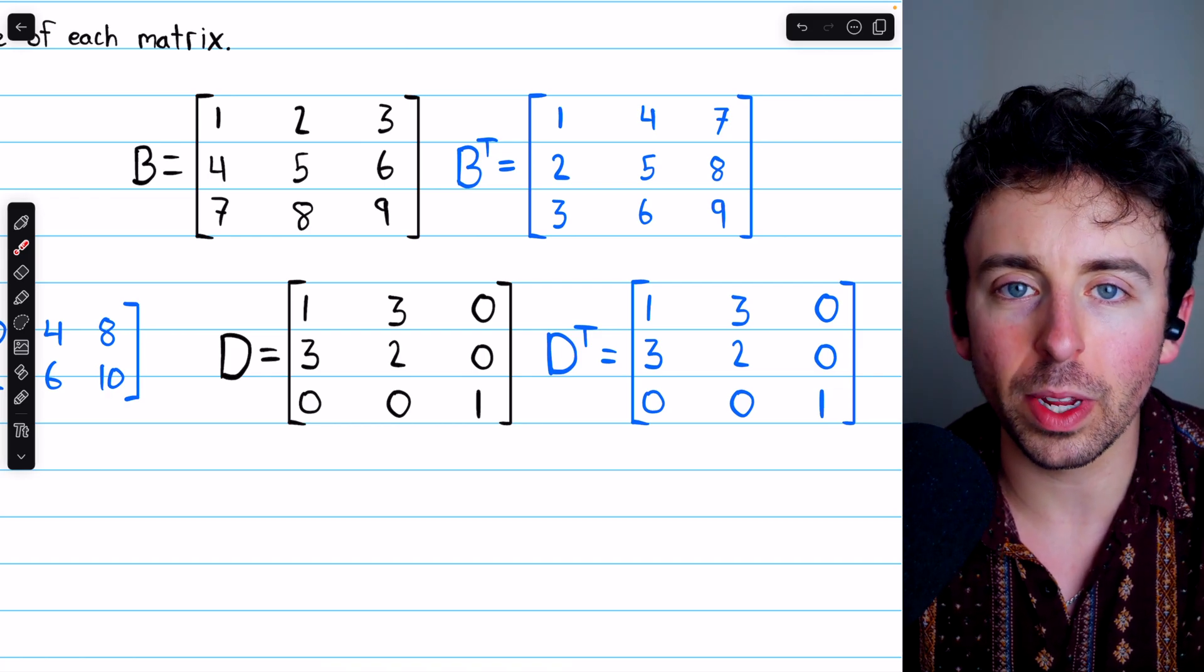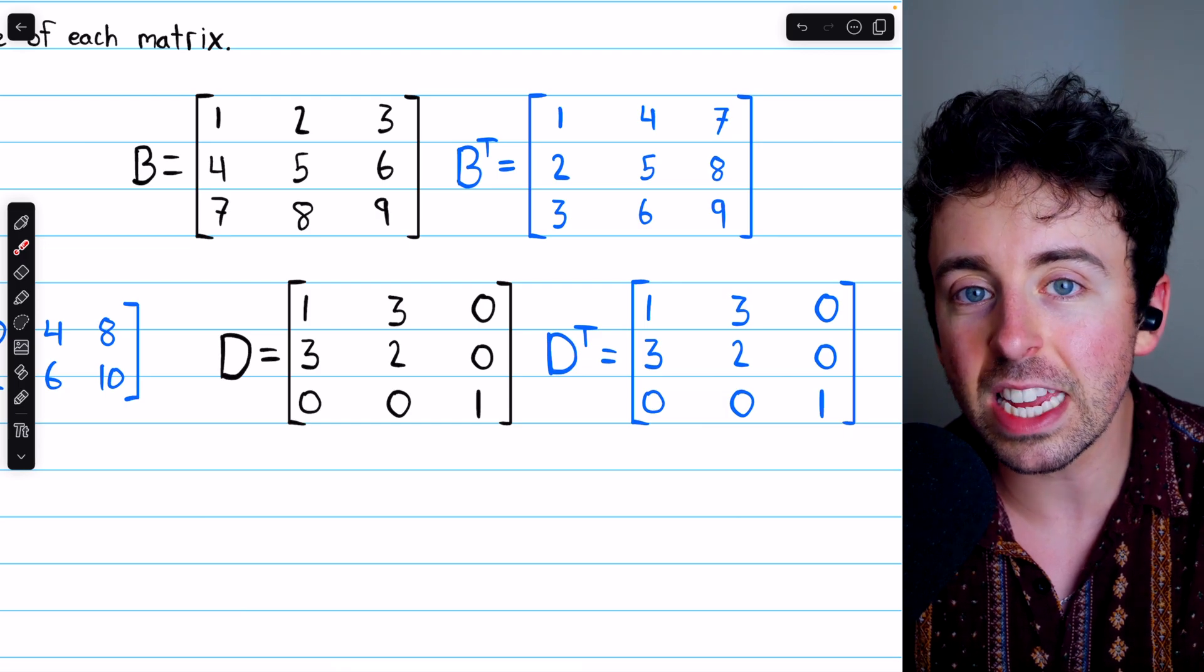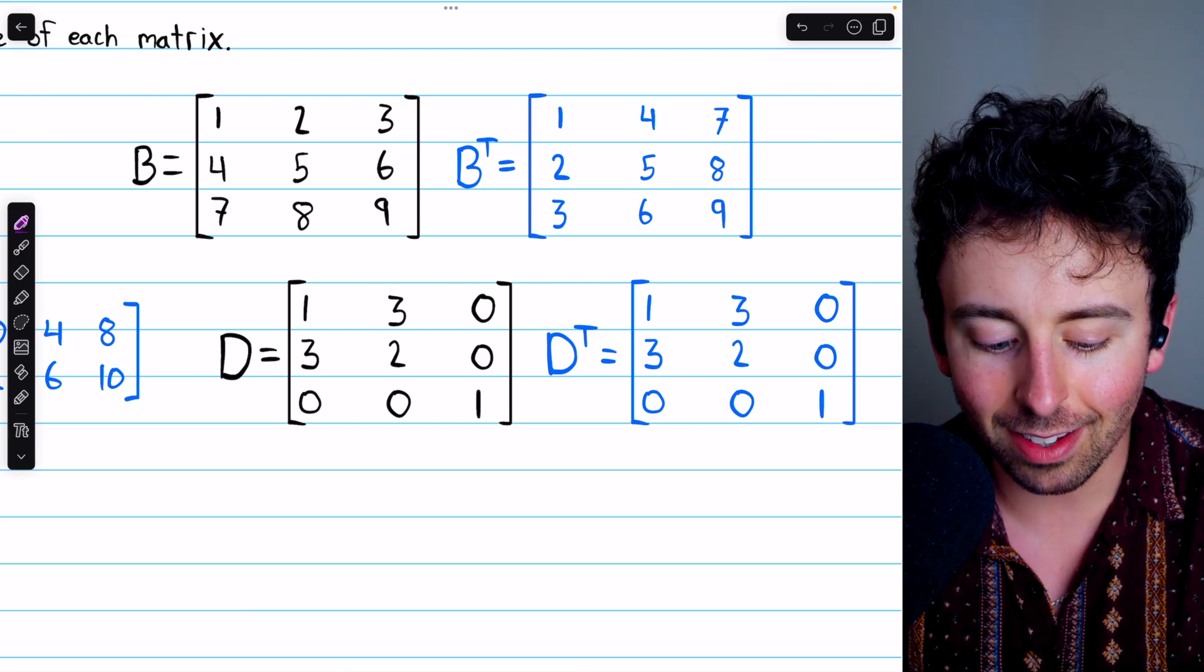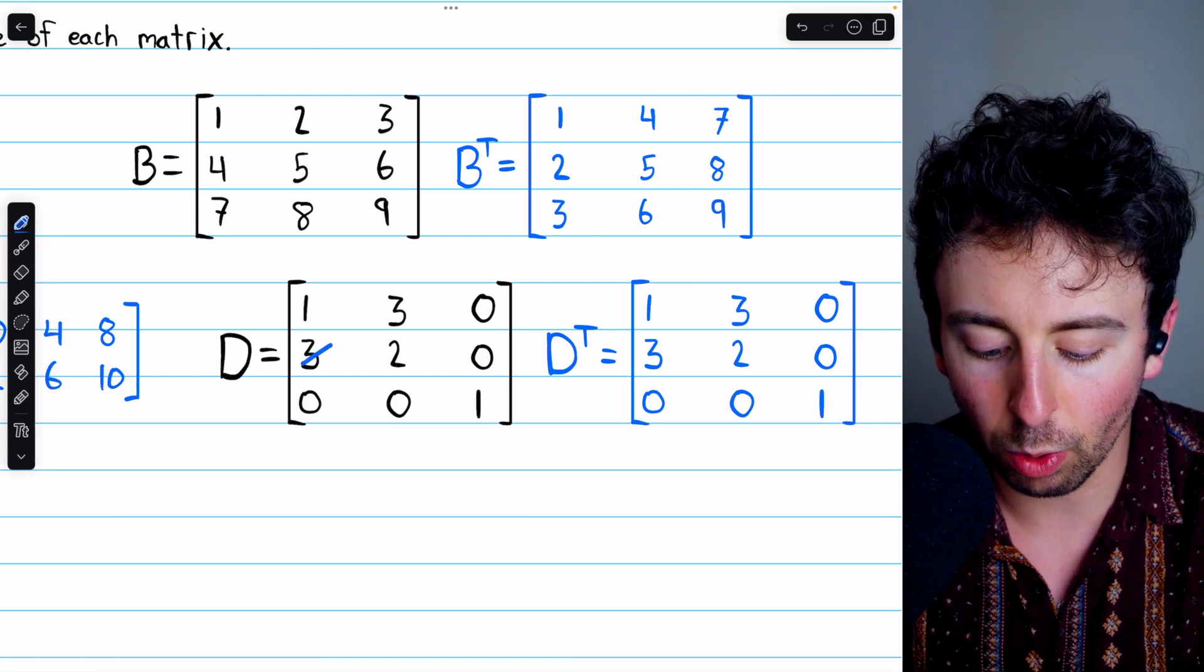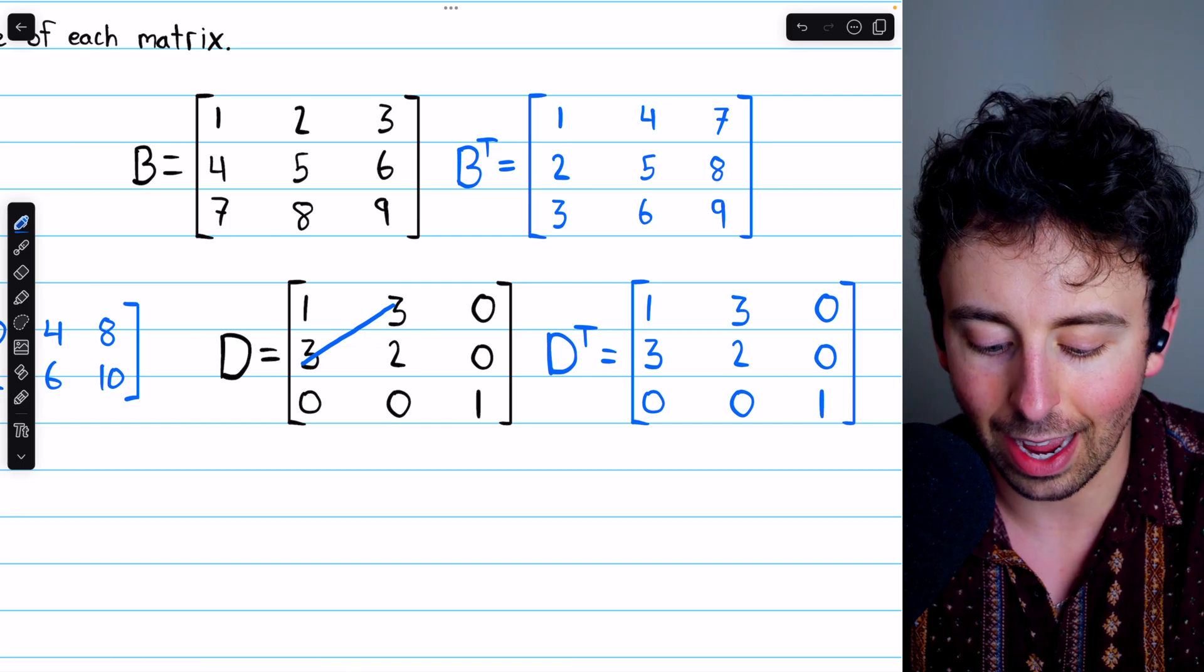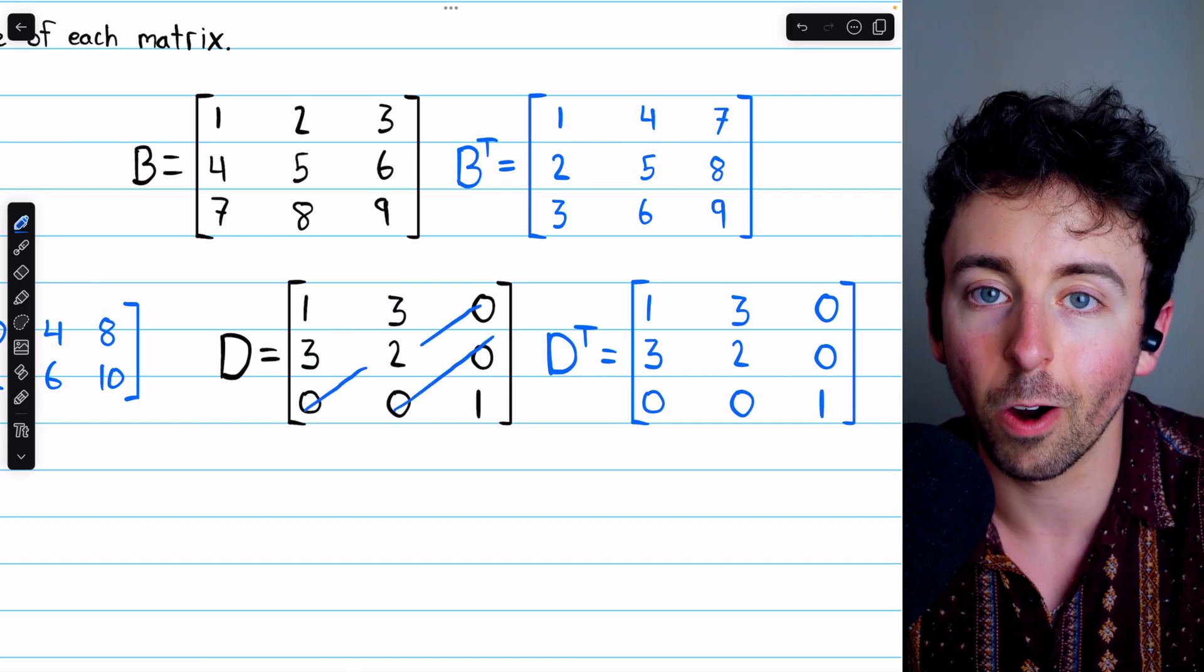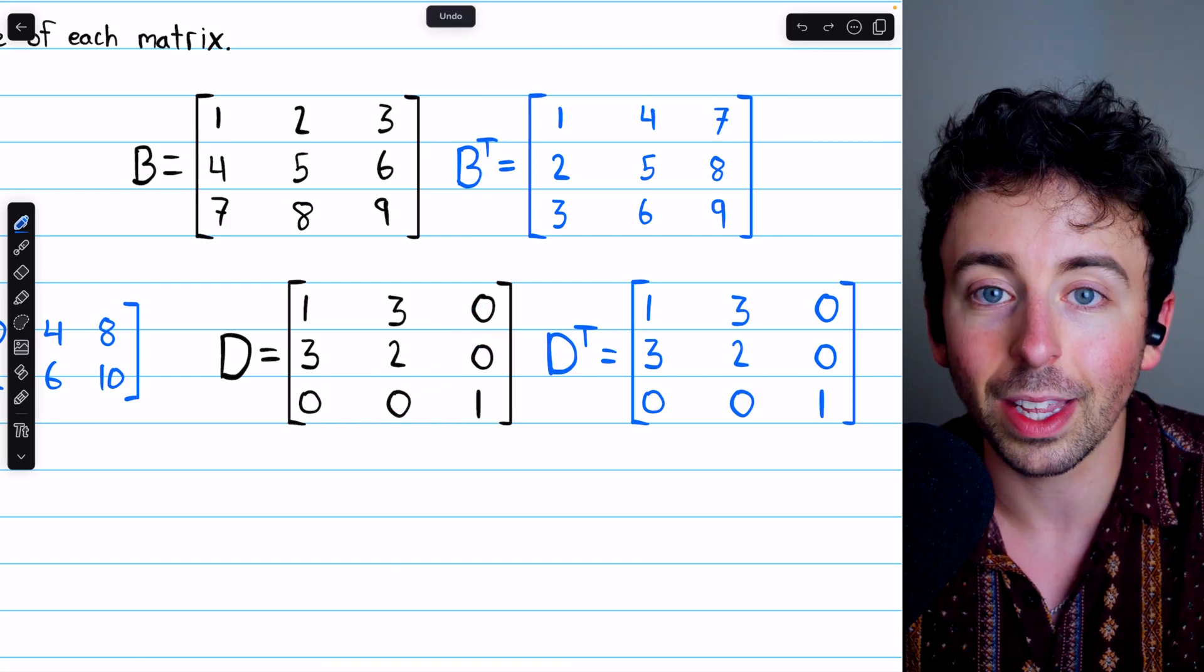One thing you might notice is that D and D transpose here are actually the same. This means that D is what we call a symmetric matrix. That's a matrix that's equal to its own transpose. Another way to recognize that is that D is symmetric about its main diagonal. Notice how these threes are mirrored across the diagonal. These zeros are mirrored. So D is a symmetric matrix.